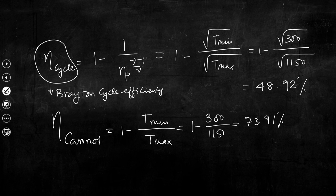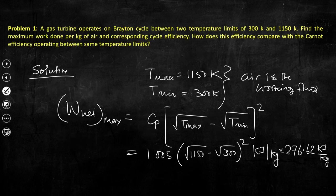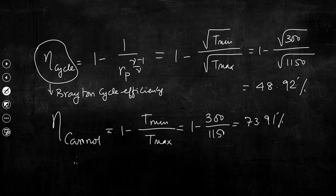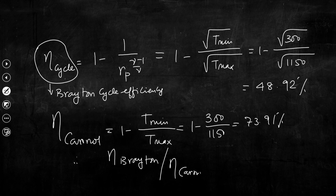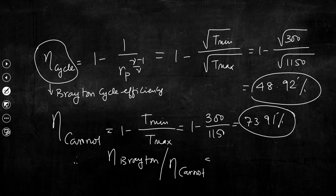The Carnot cycle is one of the ideal cycles with the highest possible efficiency, as seen from this result. The last part of this problem asks how the Brayton efficiency compares with the Carnot efficiency. We compute η_Brayton / η_Carnot, and since Brayton must be less than Carnot, it is 0.66. So the Brayton cycle efficiency is 0.66 times the Carnot cycle efficiency — gas turbines running on the Brayton cycle are significantly less efficient than Carnot.